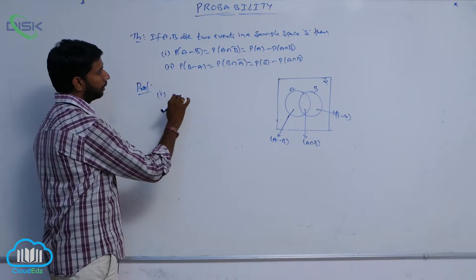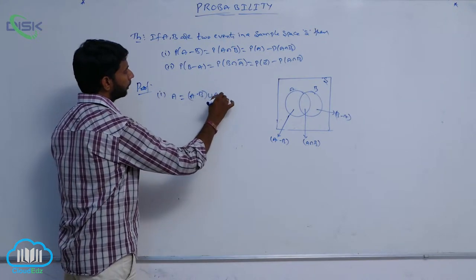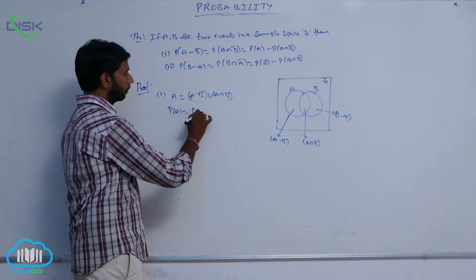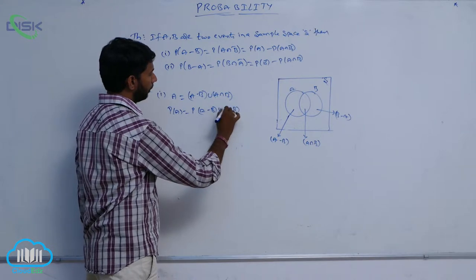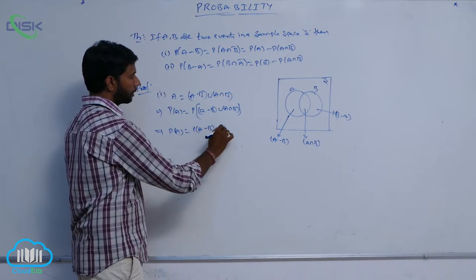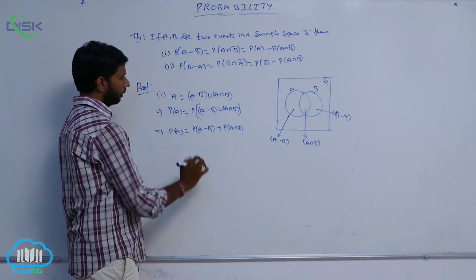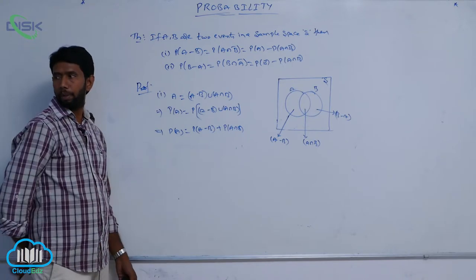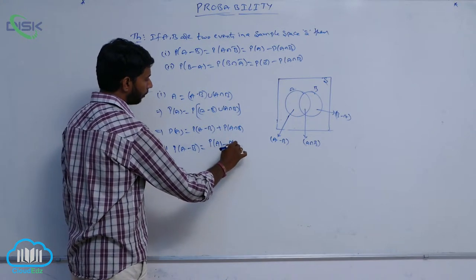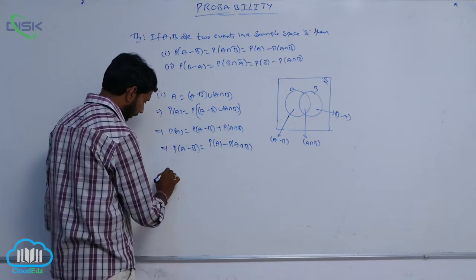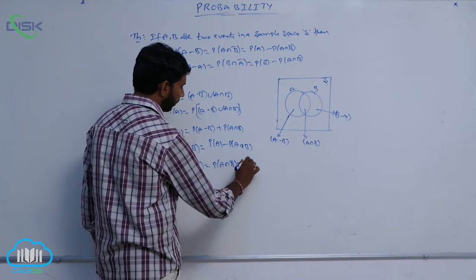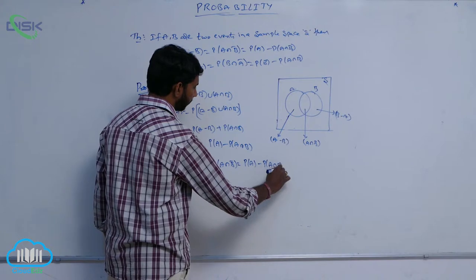A can be written as (A minus B) union (A intersection B). Then P of A is equal to P of (A minus B) plus P of A intersection B. That implies P of A minus B, which equals P of A intersection B bar, is equal to P of A minus P of A intersection B. This proves the first result.